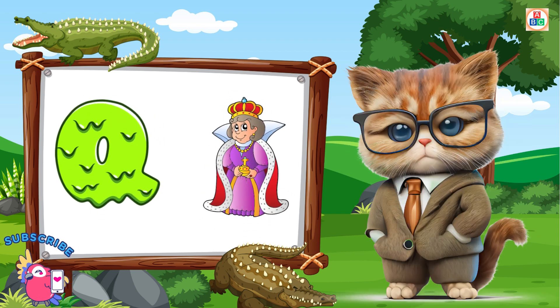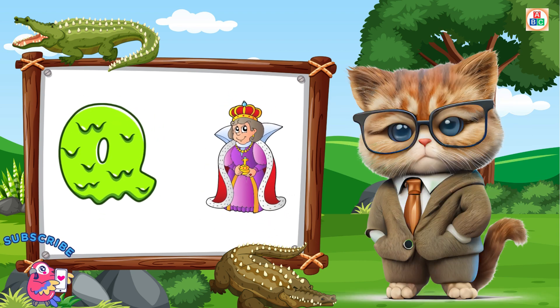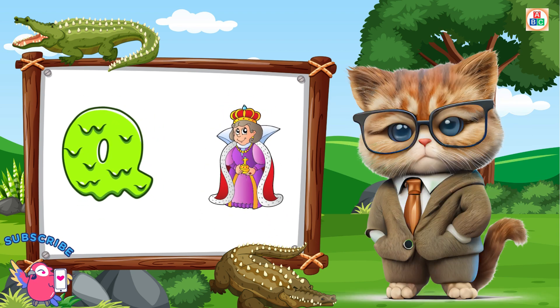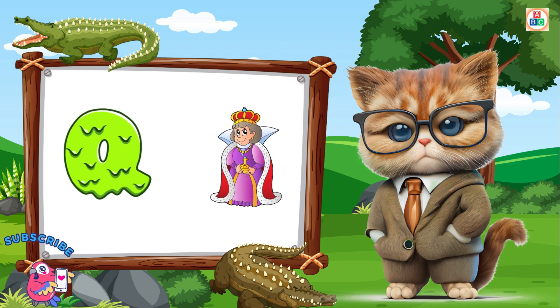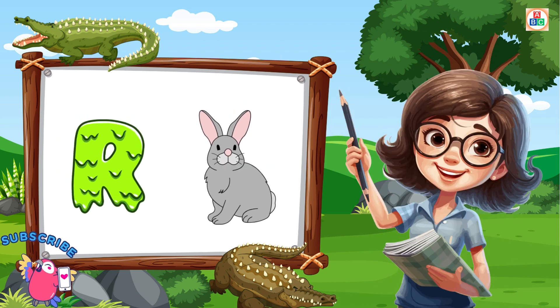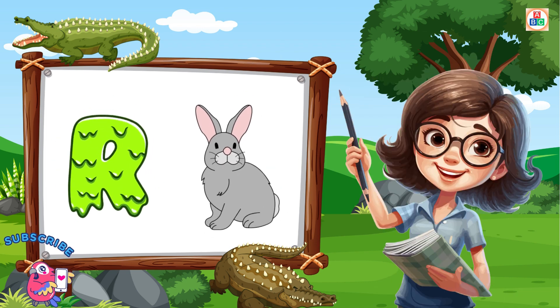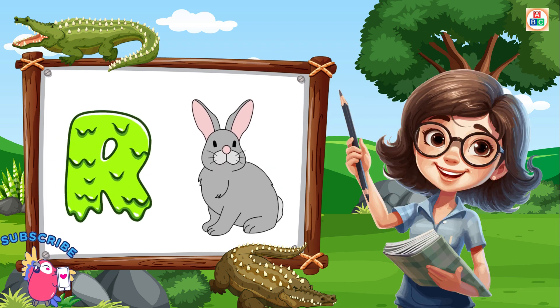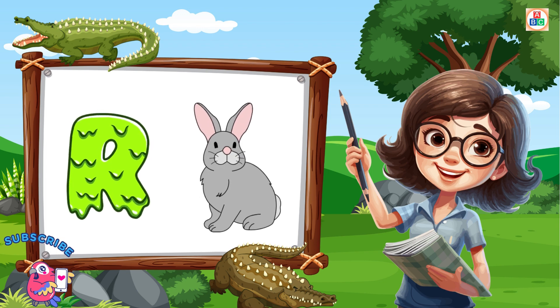Q is for queen, kw-kw-queen. R is for rabbit, r-r-rabbit.